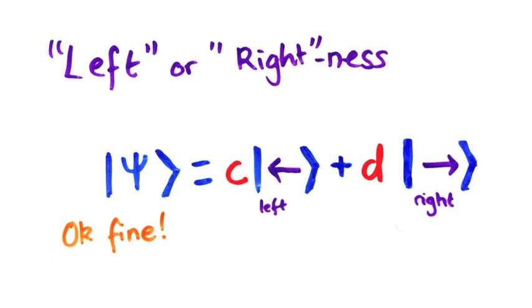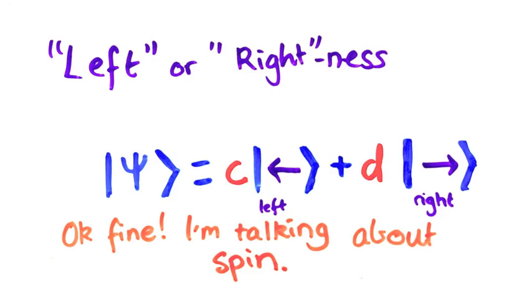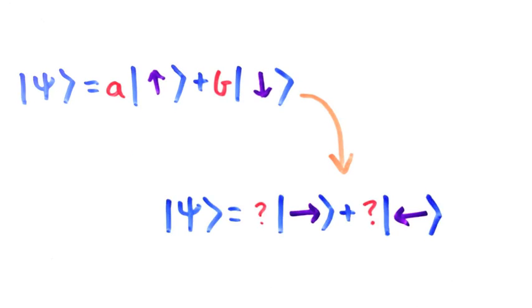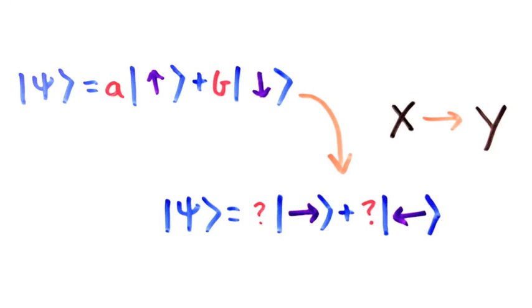I told you earlier that I should be able to rewrite the wavefunction in terms of any variable, but how do I convert from the wavefunction in terms of up downness to left rightness? Or in general, how do I go from observable x to y?